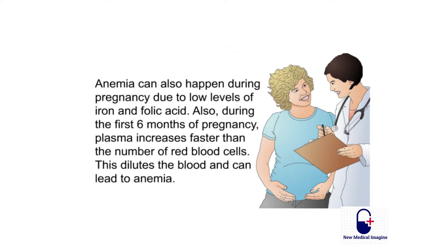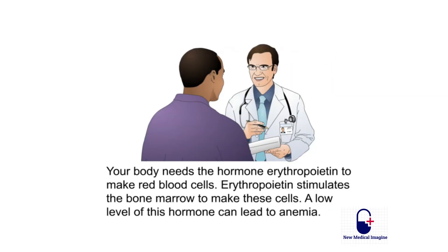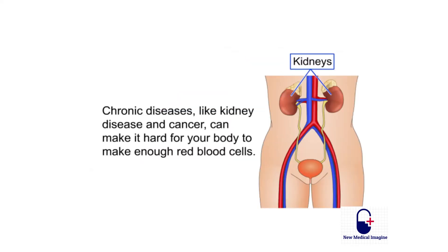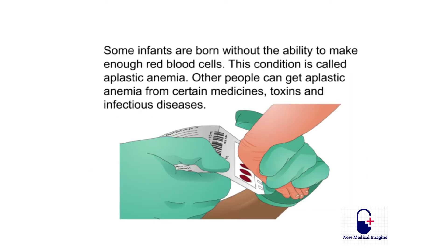During the first six months of pregnancy, plasma increases faster than the number of red blood cells, which dilutes the blood and can lead to anemia. The body needs the hormone erythropoietin to make red blood cells; a low level of this hormone can lead to anemia. Chronic diseases like kidney disease and cancer can make it hard to make enough red blood cells. Some infants are born without the ability to make enough red blood cells — a condition called aplastic anemia — while others can get it from certain medicines, toxins, or infectious diseases.